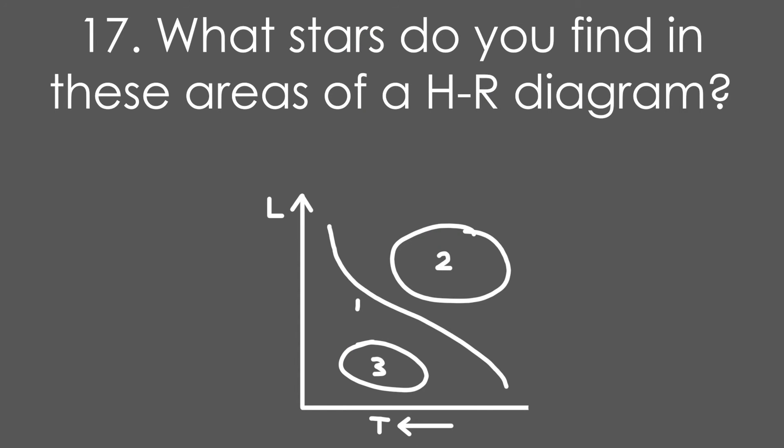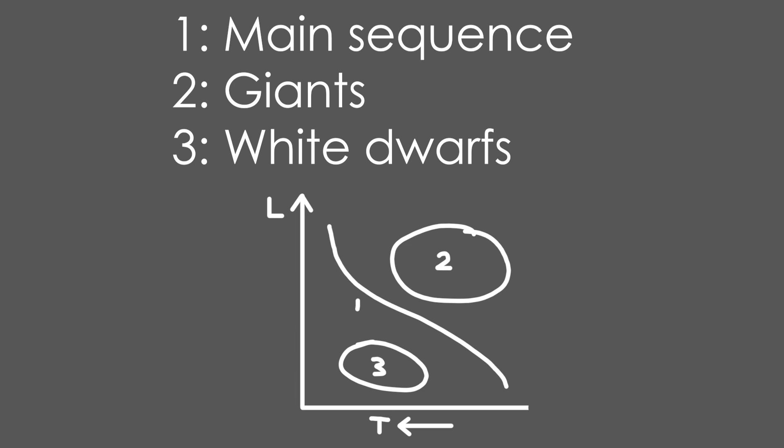Question 17: What stars do you find in these three areas of a Hertzsprung-Russell diagram? The curve is main sequence stars. 2 is where you find giants and supergiants. White dwarfs you'll find at the bottom, fairly hot but not very bright.